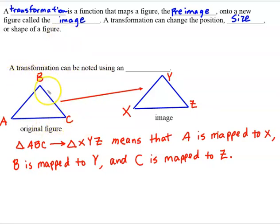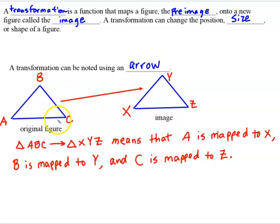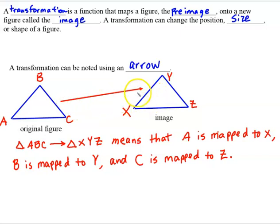A transformation can be noted by using an arrow. This is actually an example of a particular type of transformation called a translation. A translation — you could think of the word slide or move. Originally we had this triangle called ABC. The arrow indicates that it has been shifted, or we slid it, or we moved it — they're all synonymous terms for we translated it to this other triangle. It literally was moved from one place to another. We would call this the pre-image, and then this is the image.